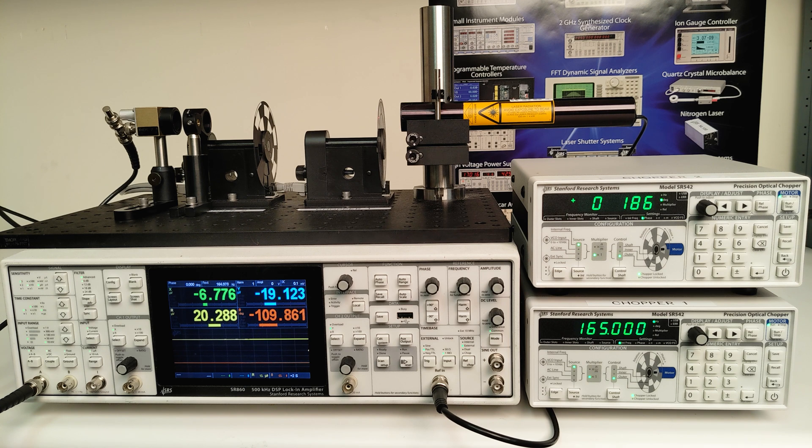The lock-in amplifier measures the RMS amplitude of the nth harmonic of the rectangular waveform. So there is a factor of 1 over square root 2 from the RMS and a factor of 2 over pi for the n equals 1 Fourier coefficient since we are measuring the n equals 1 harmonic with the lock-in.